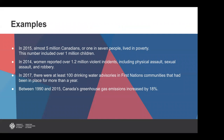Some quick examples of substantive gaps: in 2015, almost five million Canadians — one in seven people — lived in poverty, including over a million children. In 2014, women reported over 1.2 million violent incidences, including physical assault, sexual assault, and robbery. In 2017, there were at least 100 drinking water advisories in First Nations communities that had been in place for more than a year. And between 1990 and 2015, Canada's greenhouse gas emissions increased by 18%.